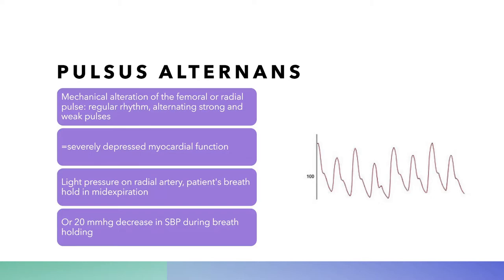Another common symptom is pulsus alternans — the pulse strength alternates between high and low every other beat, a mechanical alteration with a regular rhythm. This is indicative of severely depressed myocardial function and heart failure. You could check this by putting light pressure on the radial or femoral artery, having the patient hold their breath in mid-expiration. Another test is to see if there's a 20 mmHg decrease in systolic blood pressure during breath holding — indicative of pulsus alternans and heart failure.